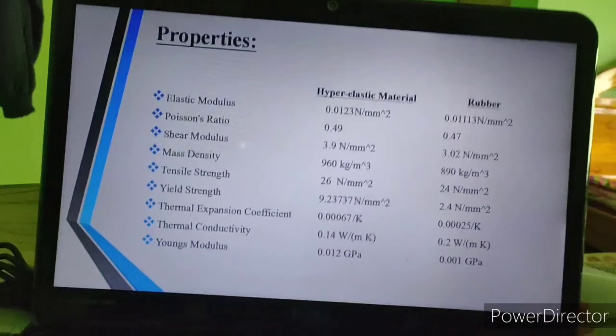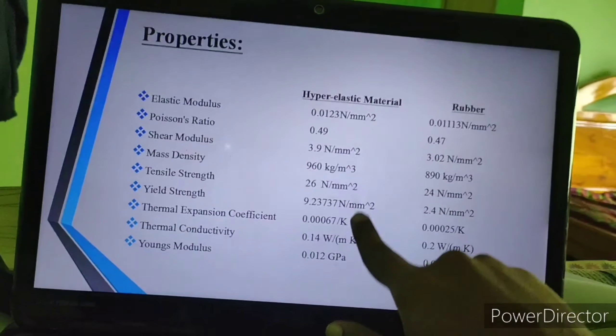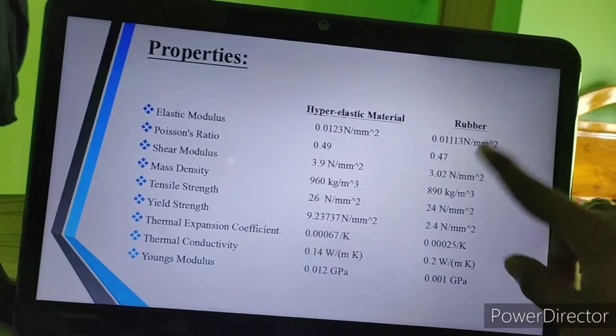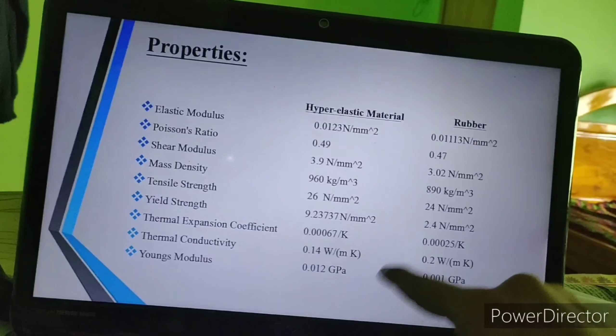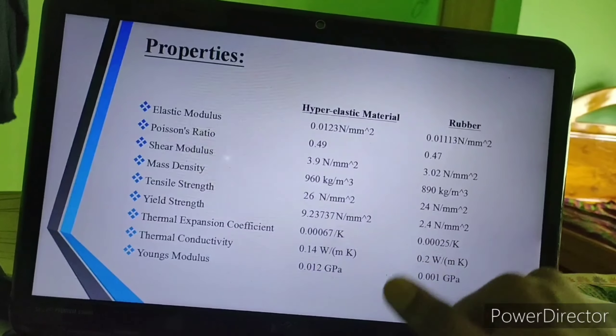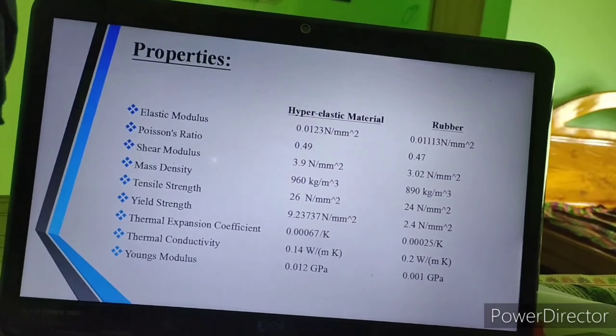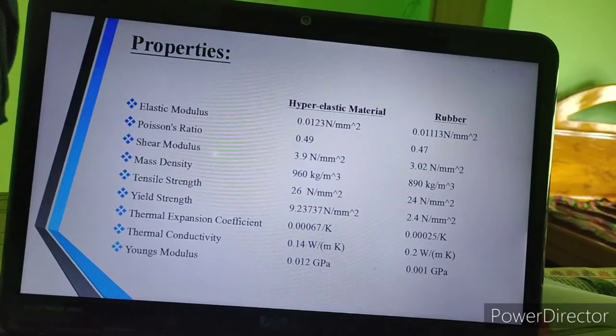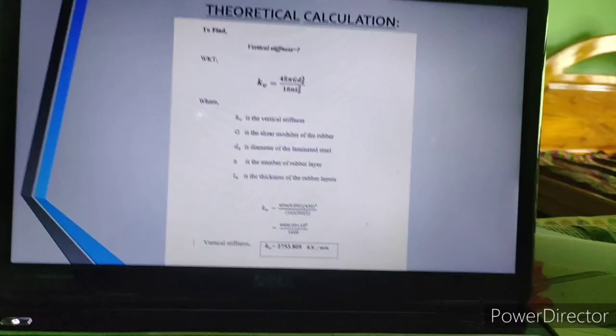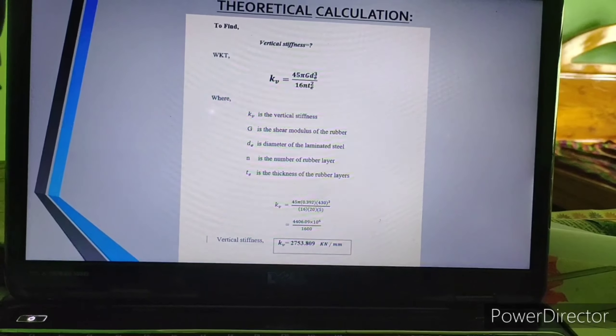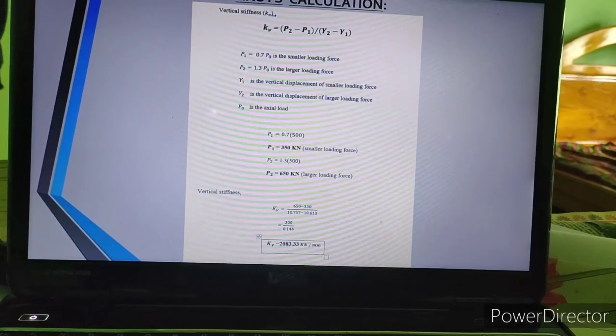These are the general properties, general properties of a hyperelastic material and a rubber. Instead of rubber, hyperelastic material gives more accuracy and more compressive strength than rubber. So we prefer hyperelastic material to get more compressive strength during the natural disasters. This is the theoretical calculation of our project. ANSYS calculation.